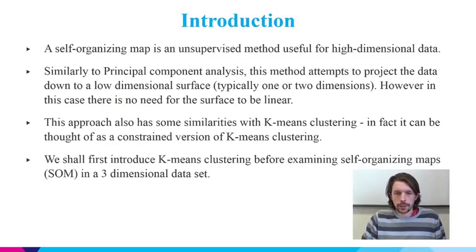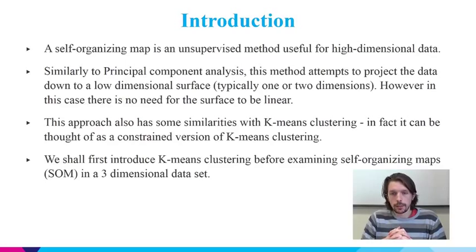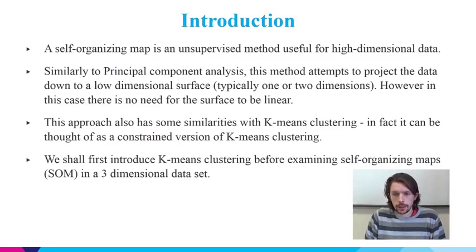One of the differences is that with self-organizing maps, there is no constraint that this low-dimensional surface be linear. Self-organizing maps has some strong similarities with what is called k-means clustering. In fact, it can be thought of as simply a constrained version of k-means clustering. So what I'm going to do is start off by describing the k-means method, and then from that develop into the self-organizing map.